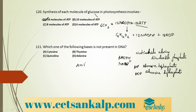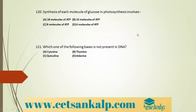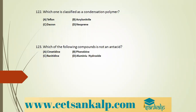Q: Which base is not present in DNA? Complementary base pairs in DNA: A–T and C–G (adenine, thymine, cytosine, guanine). In RNA, uracil (U) replaces thymine. Quinoline is not a base in DNA or RNA. Q: Which of the following is a condensation polymer? Teflon is an example — all others are addition polymers.